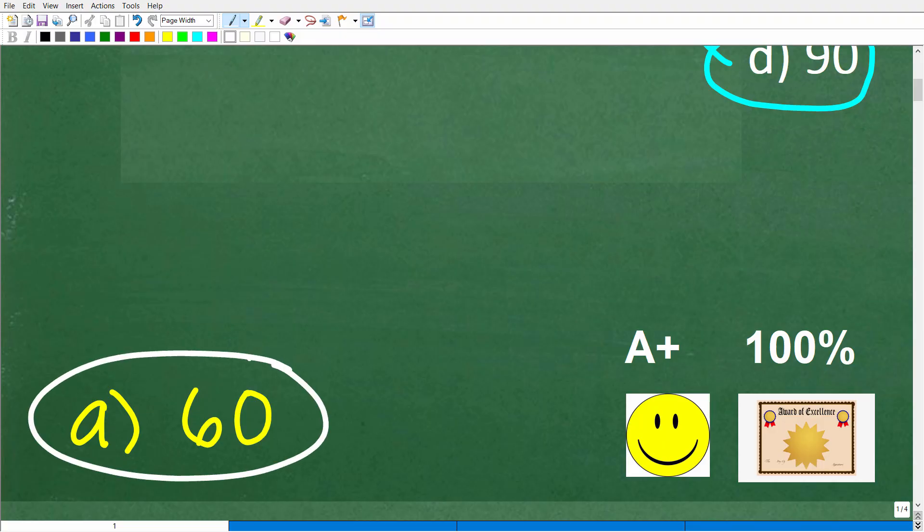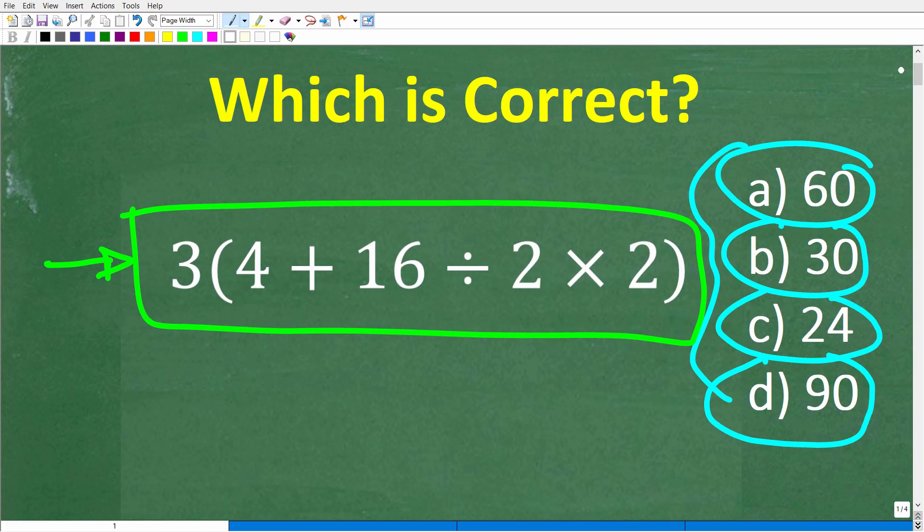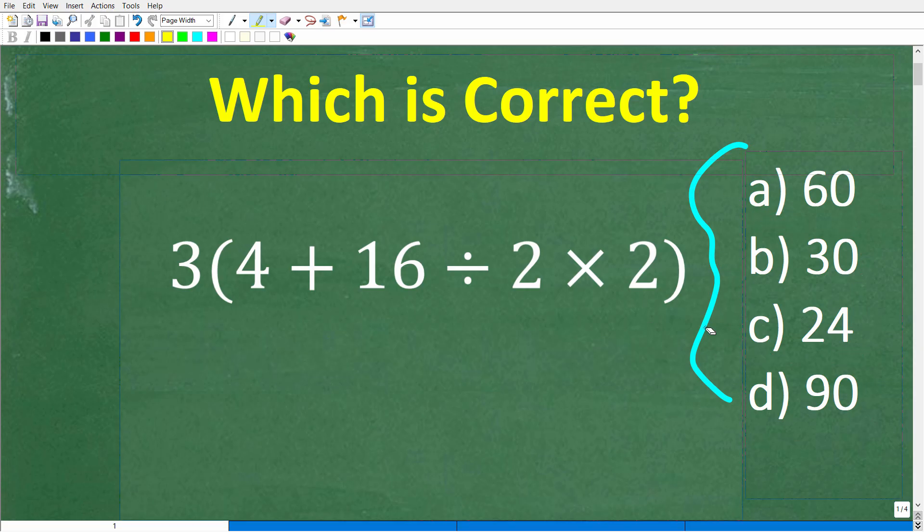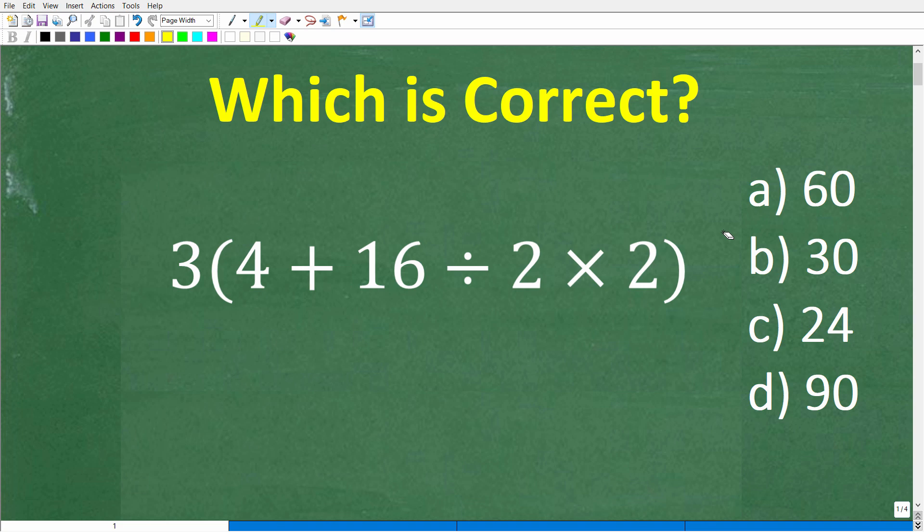All right. Now, if you got this right, you definitely get a happy face, an A+, a 100%, and a Certificate of Excellence because you appear to be a certified professional expert in the area of the order of operations. Because assuming you know how to do basic multiplication, addition, and division, no one should get this wrong. Well, if someone does get this problem wrong, it's likely because they took the wrong order.